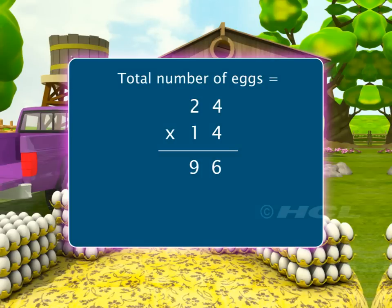Before multiplying 24 by 1 at the tens place, we put a 0 at the ones place in the answer. Multiplying 24 by 1, we get 24 itself.